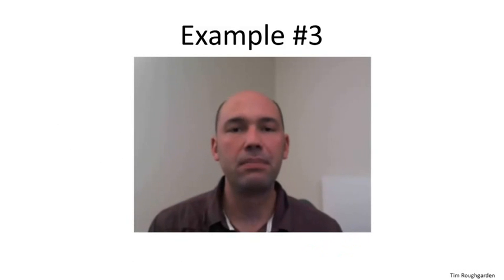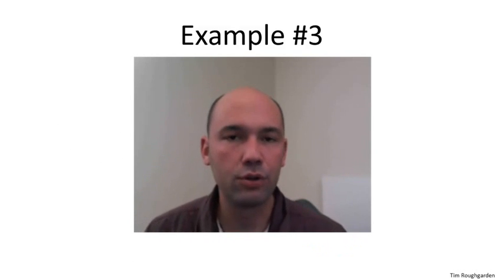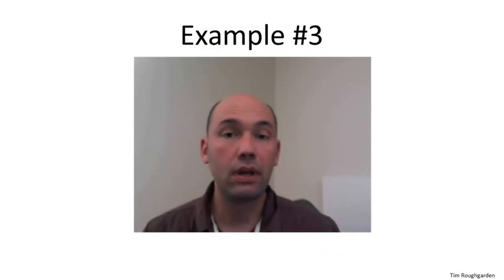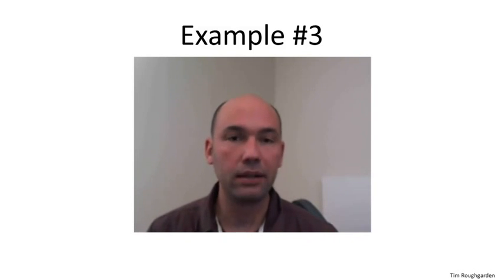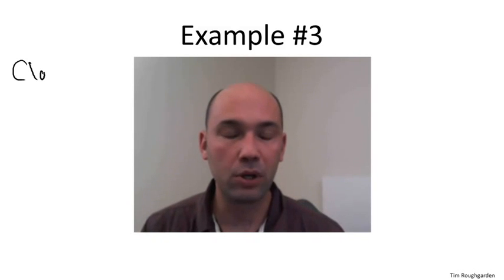Our third and final example is a little bit more complicated than the first two. It'll give us some practice using theta notation. Recall that while big O is analogous to saying one function is less than or equal to another, theta notation is in the spirit of saying one function is equal asymptotically to another.